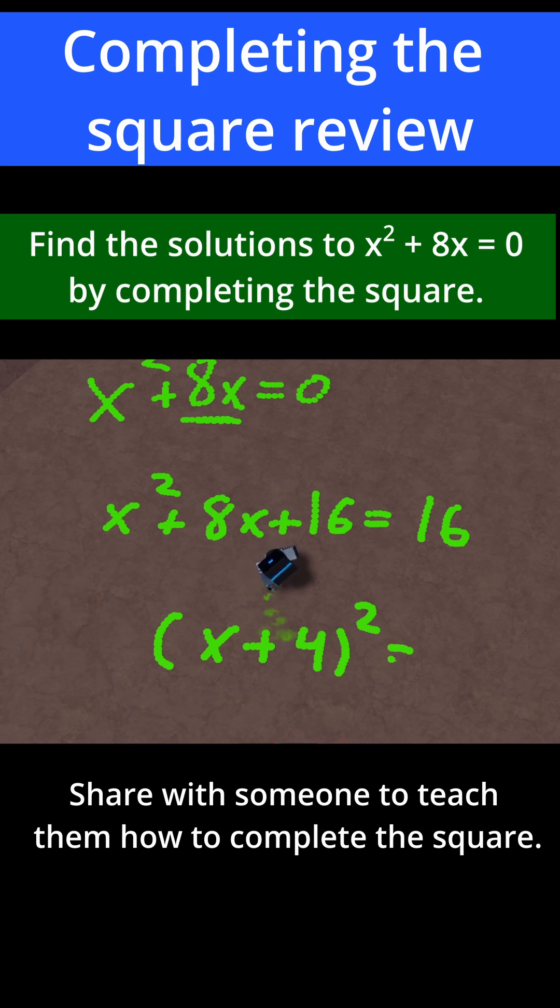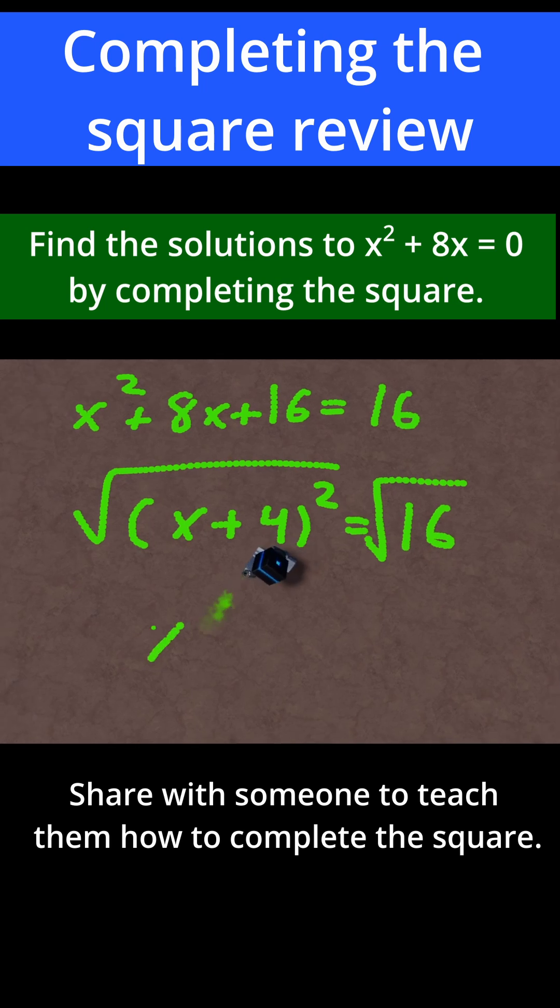Then this whole thing is set equal to 16. Now I see that we have x plus 4 squared. I can just take a square root to get rid of that squared. So why don't I do that? Take the square root of both sides. After that, I'll have x plus 4, because the square and the square root will cancel out, is equal to the square root of 16, which is plus or minus 4.